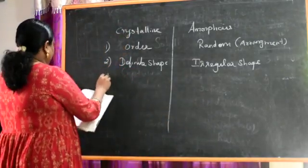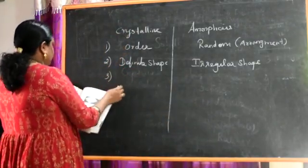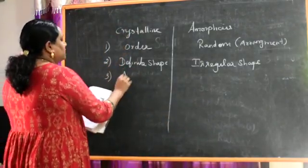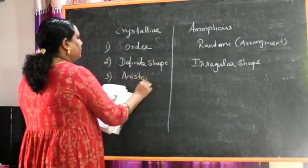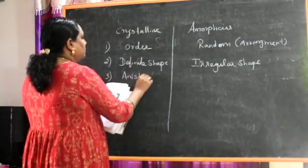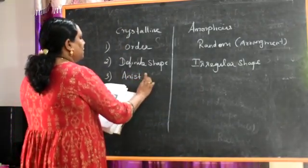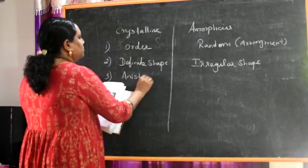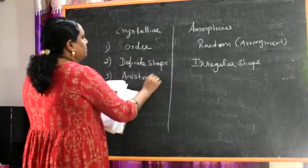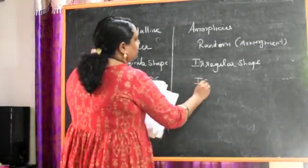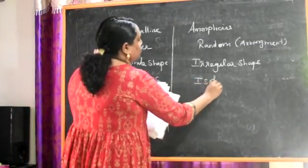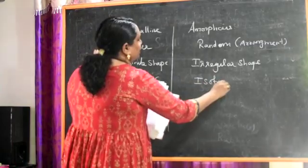The third difference is anisotropic and isotropic nature. Crystalline solids are anisotropic in nature, and amorphous solids are isotropic in nature.